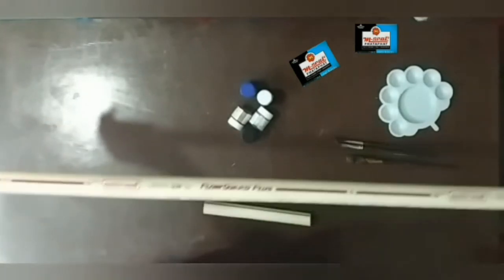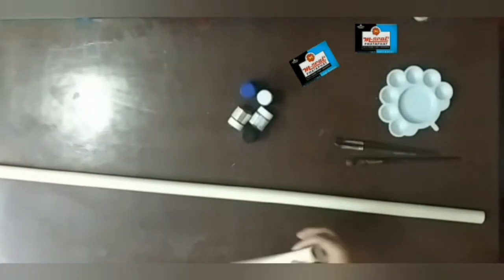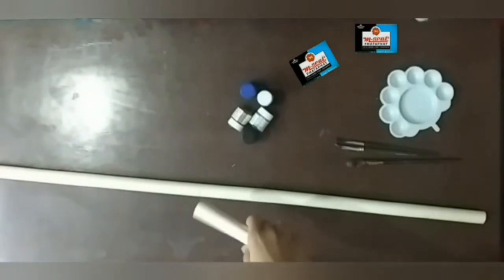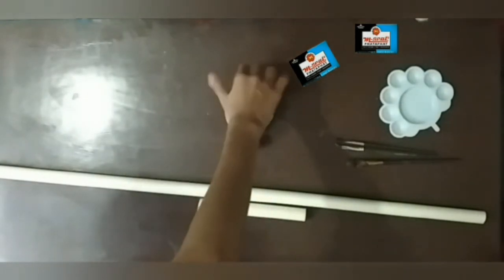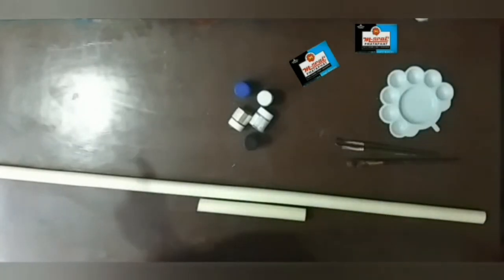Hemp seal, PVC pipe of 2.5 feet and a small PVC pipe size of your hand span. Gold paint, silver color, black color, blue and white color. Some paint brushes and a palette. So let's make it.